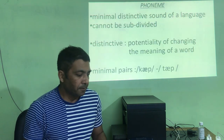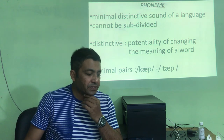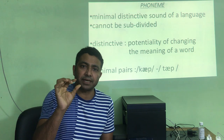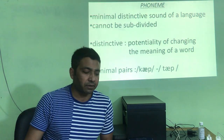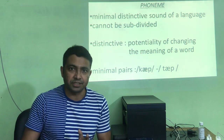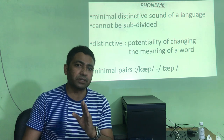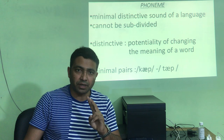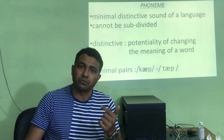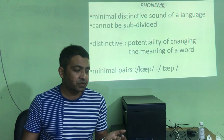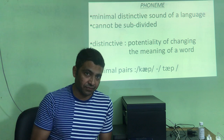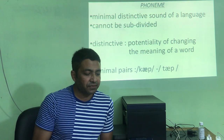We start with the concept of phoneme. A phoneme is the minimal distinctive unit of a particular language. Any language has a selected set of sounds that cannot be further divided — for example, the sounds in 'pub' in English. To be a phoneme, two principles apply: first, it cannot be subdivided further; second, if you change the phoneme in a word, the meaning changes — for example, 'cap' and 'tap'. This feature is called distinctiveness.